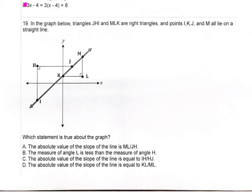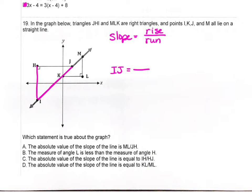Problem 19 is about slope. Slope is rise over run. For segment IJ, the rise is from I to H and the run is from H to J, giving the slope for that line. For line KM, the slope equals the rise from L to M over the run from K to L.